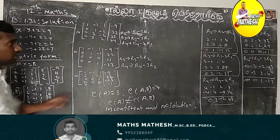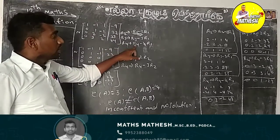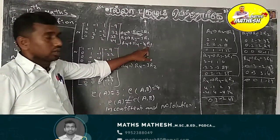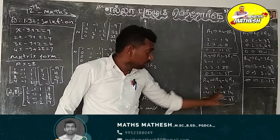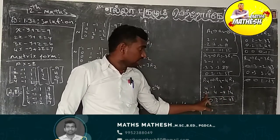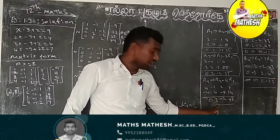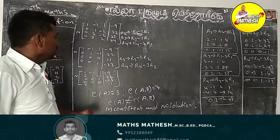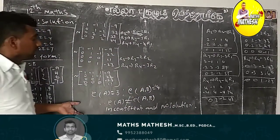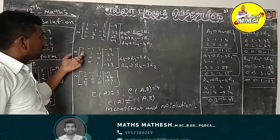R4 minus 4R1. Also R4 minus 4R1. This is R4 minus 3R1.